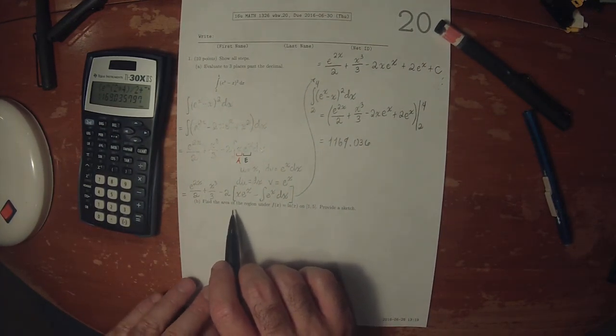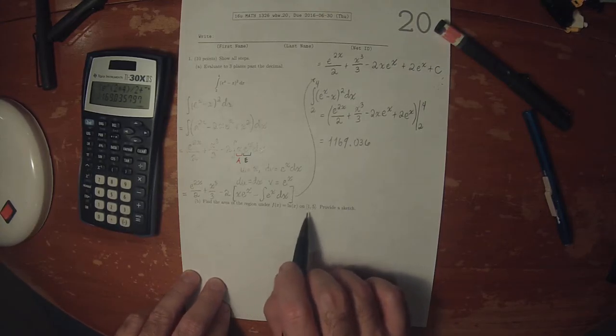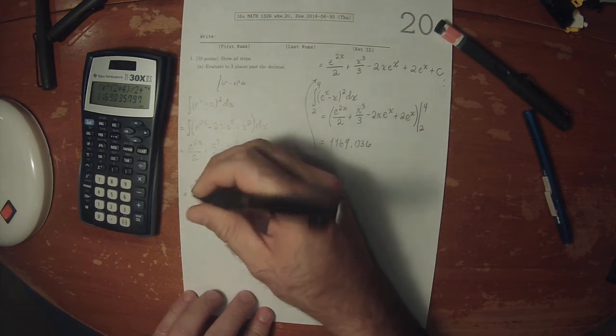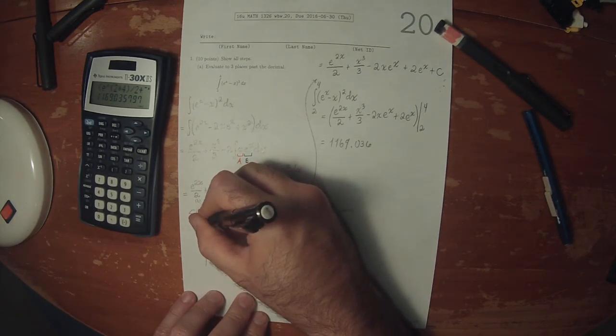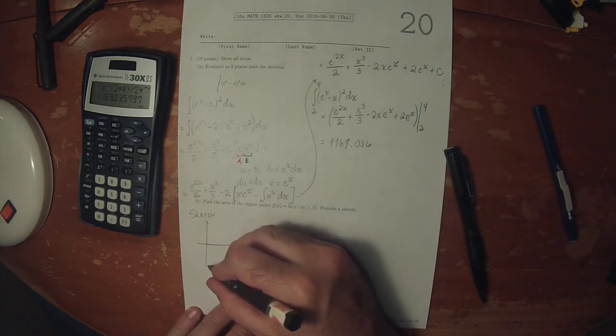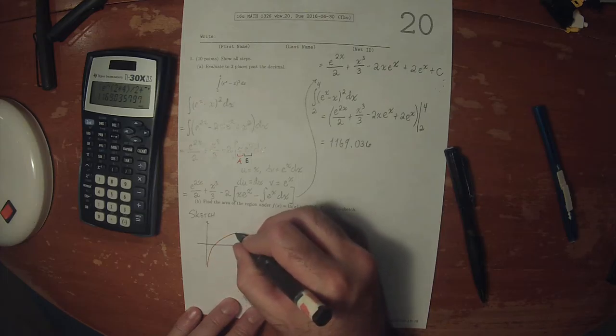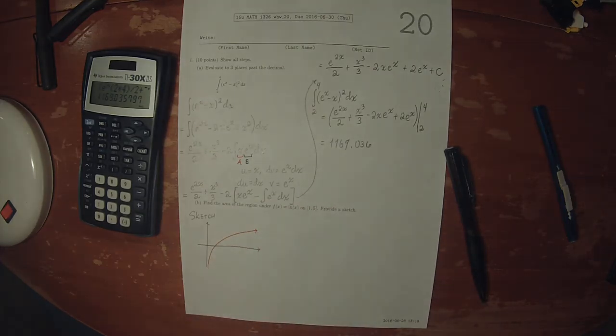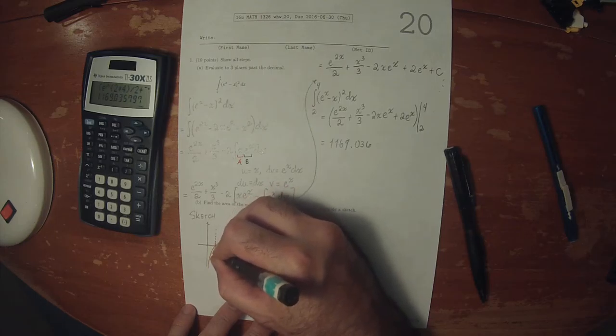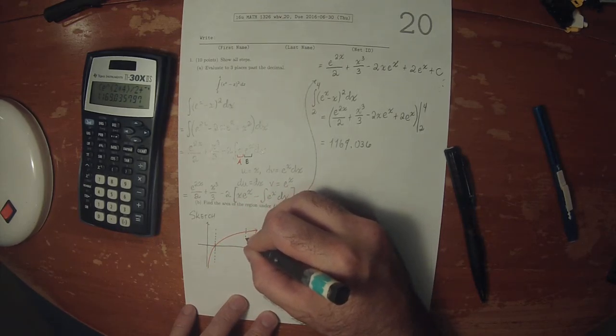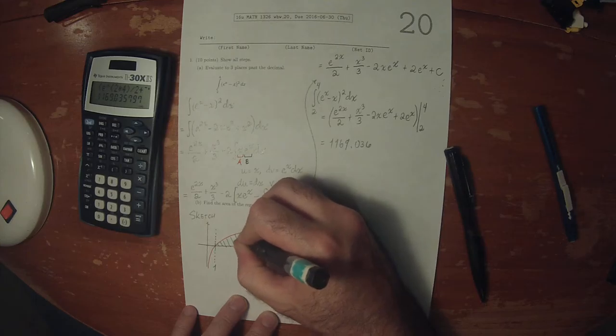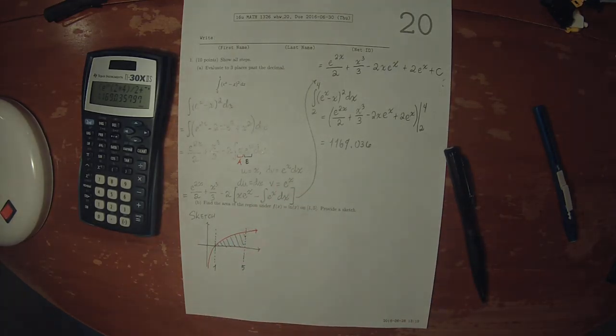Find the area of the region under this function and provide a sketch. So the sketch: log of x looks like this. At 1 is this crossing, and 5 is somewhere over here. So 1 and 5. That's what the sketch looks like.